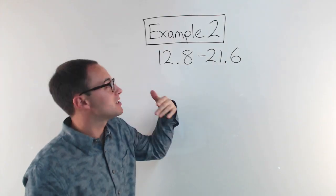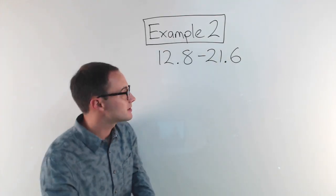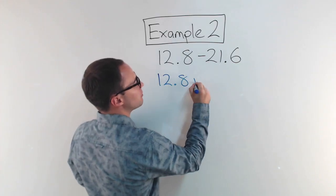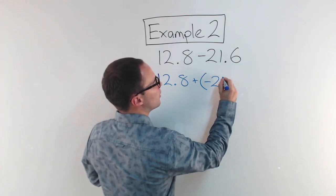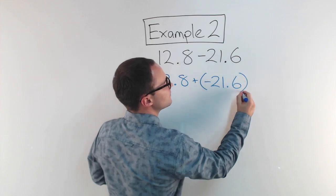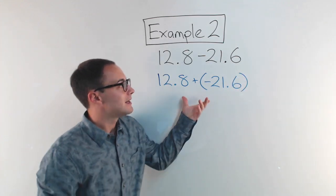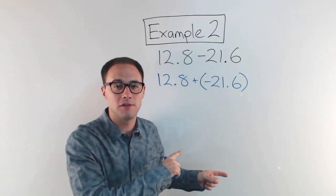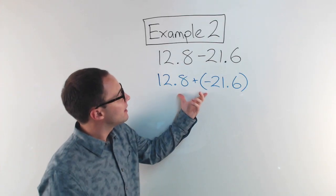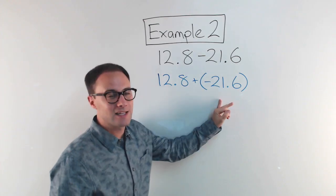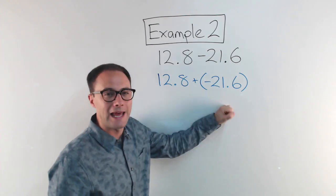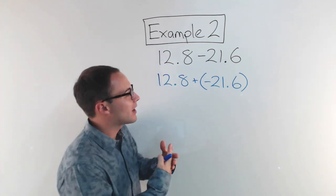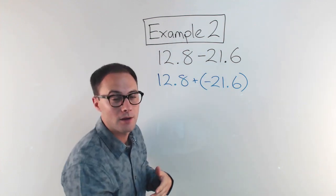Same thing. Subtracting a rational number, I'm going to change it to an addition problem first. So that's going to become 12.8 plus a negative 21.6. Now, adding rational numbers, we've already done that. If you still need some practice, look at the previous video. But here we've got different signs. We're adding a positive with a negative, which means some things are canceling out. And to figure out what's left over, we need to subtract.